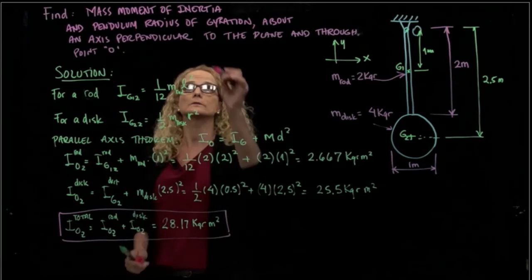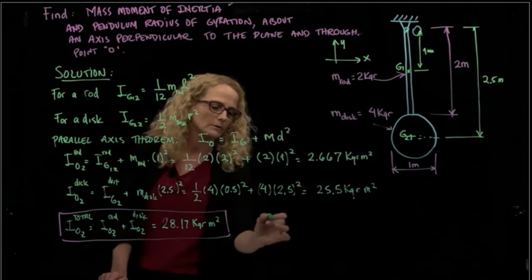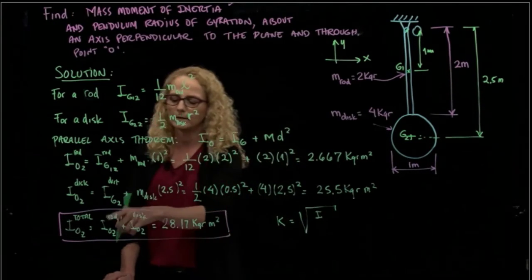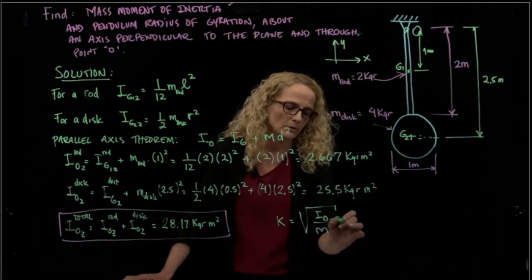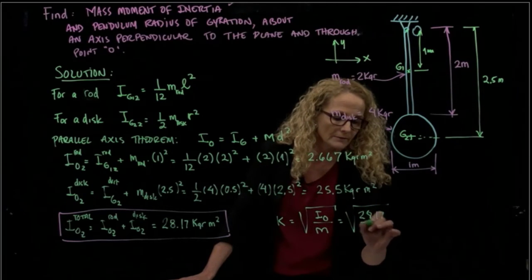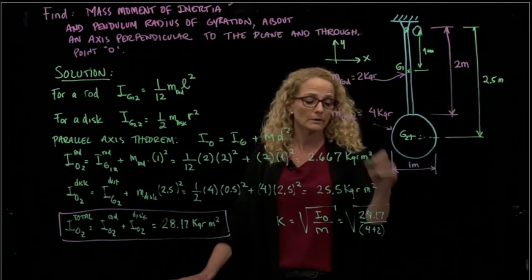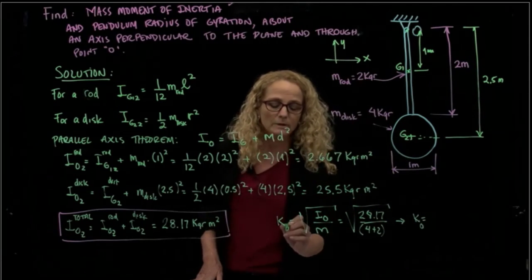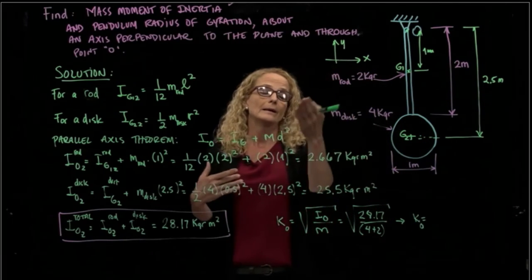And the second value that we were asked to find, so here mass moment of inertia, the radius of gyration. So you remember that the definition of radius of gyration is equals to the square root of that value of the inertia that we just found over the mass, the total mass. So that will be the square root of 28.17 divided by the total mass, and the total mass will be 4 plus 2. So 4 kilograms plus 2 kilograms. So the radius of gyration, let's say about O,